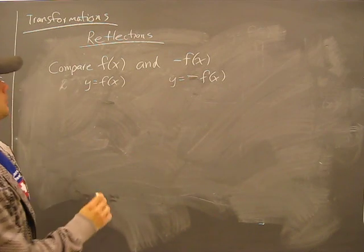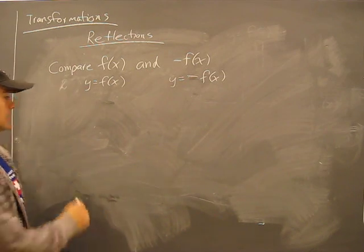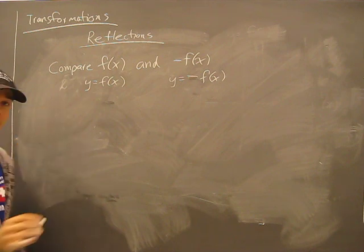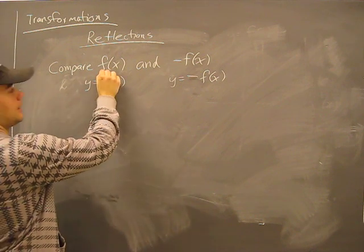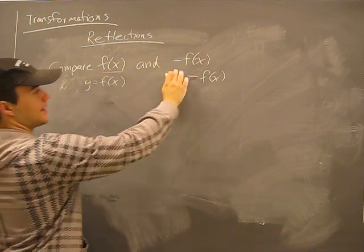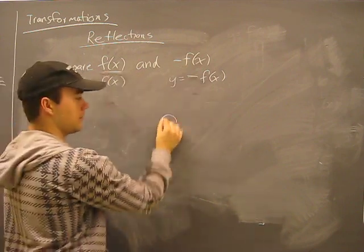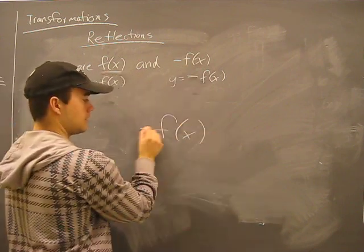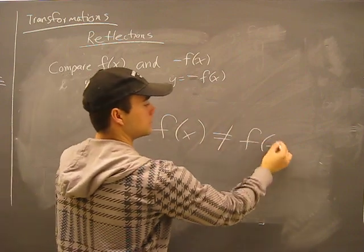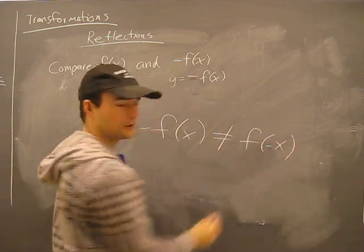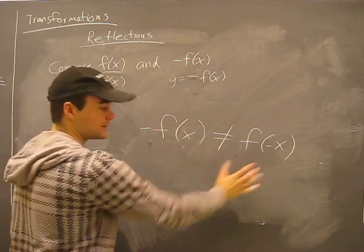All right, we're going to do an example of the first kind of reflection. This is the reflection of another picture, comparing f(x) and negative f(x) — they are not equal, they are not the same.